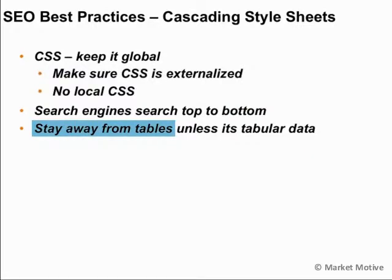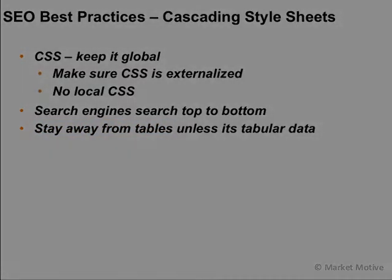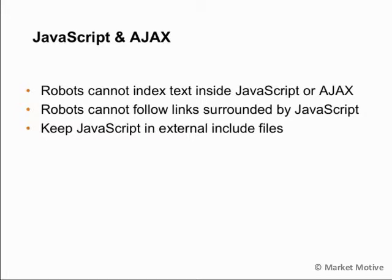Stay away from tables unless it's actually tabular data — tables were used more often in the past for design, but that's less common now. With JavaScript, most robots have a hard time with JavaScript or Ajax, so stay away from it or include options for search engines to see that content, such as a text version. Any links surrounded by JavaScript they handle reasonably well, but when in doubt, call JavaScript from external include files. Test to see if Google is actually getting content within your JavaScript, and develop alternate ways to deliver content stored in Ajax or JavaScript to the search spider.